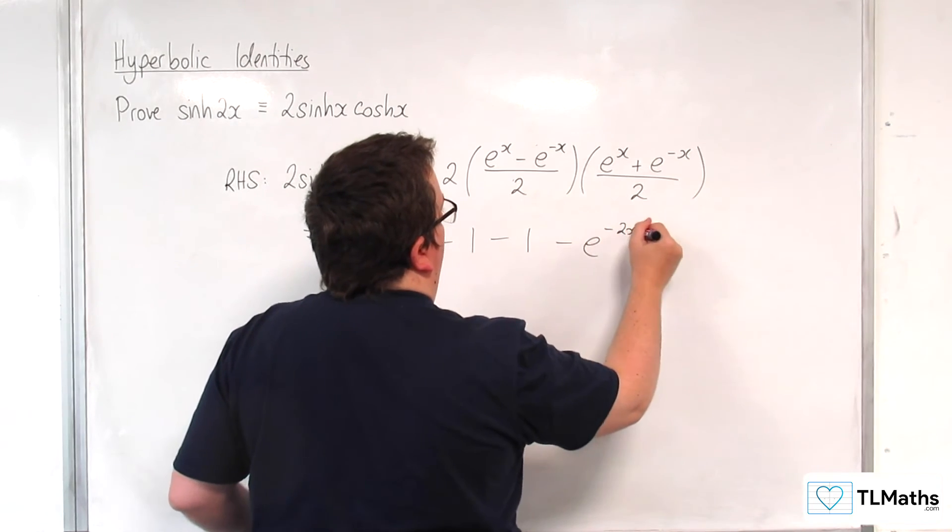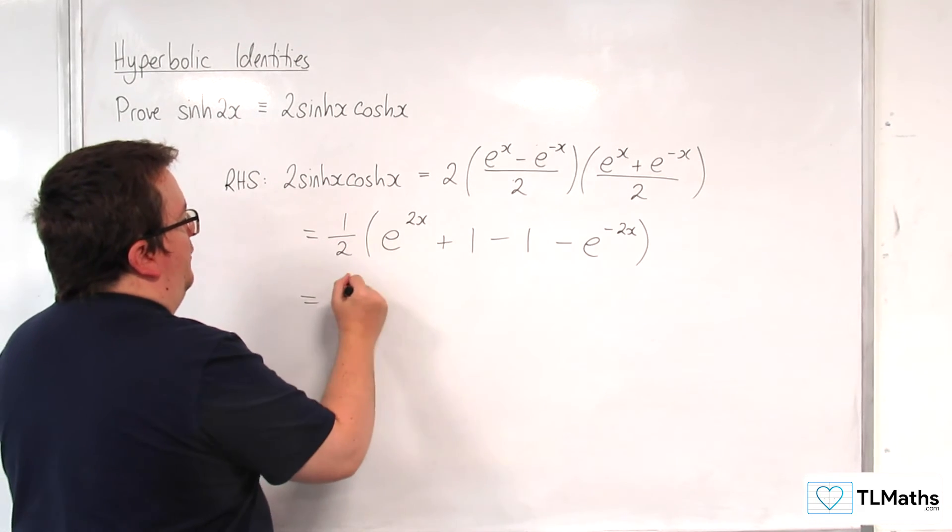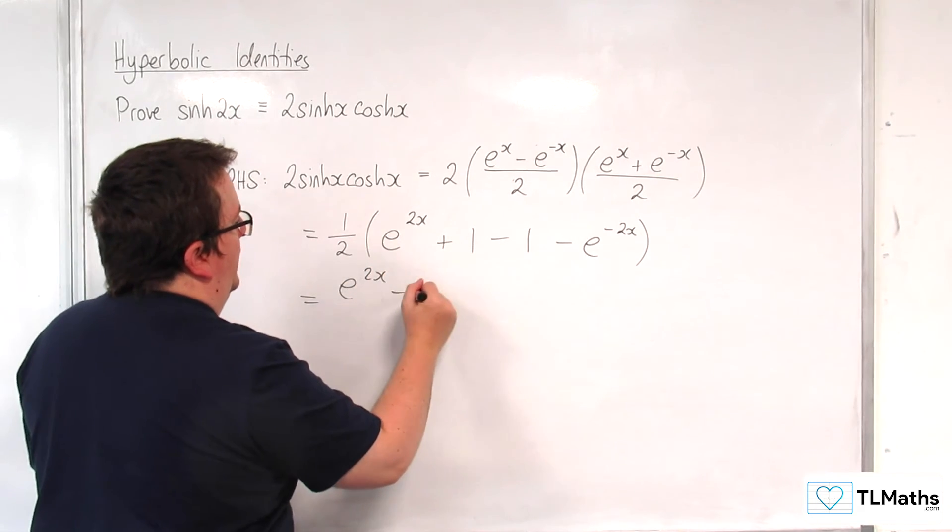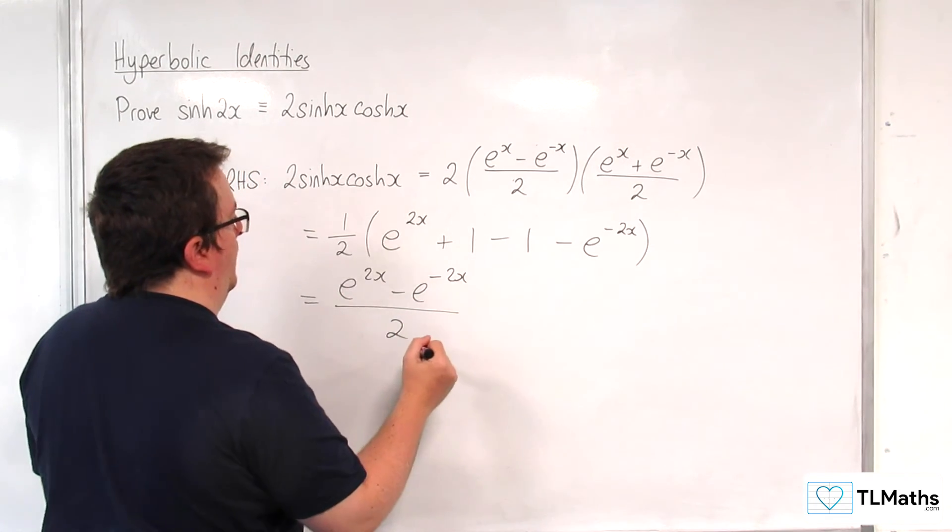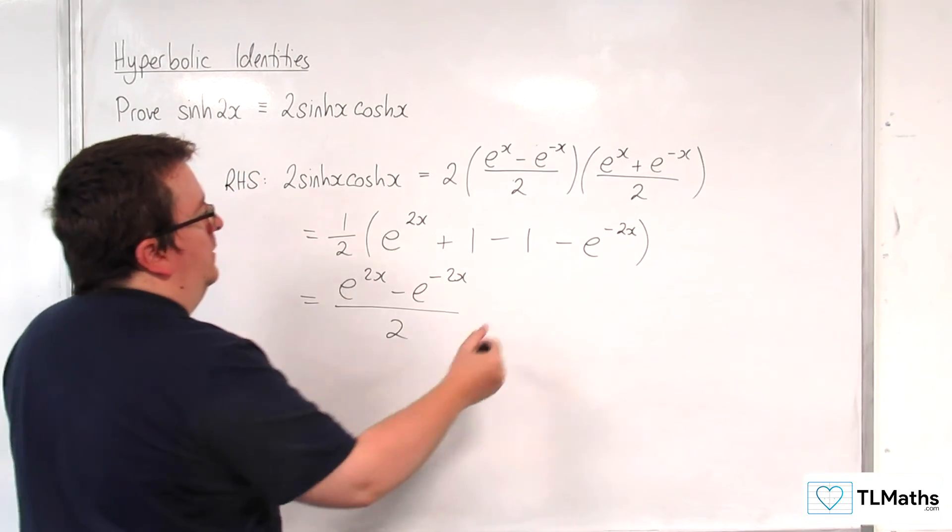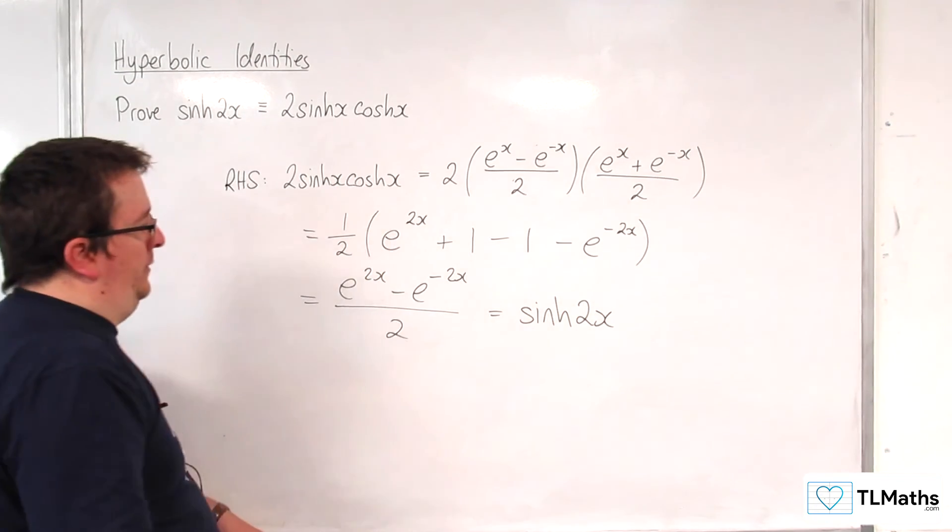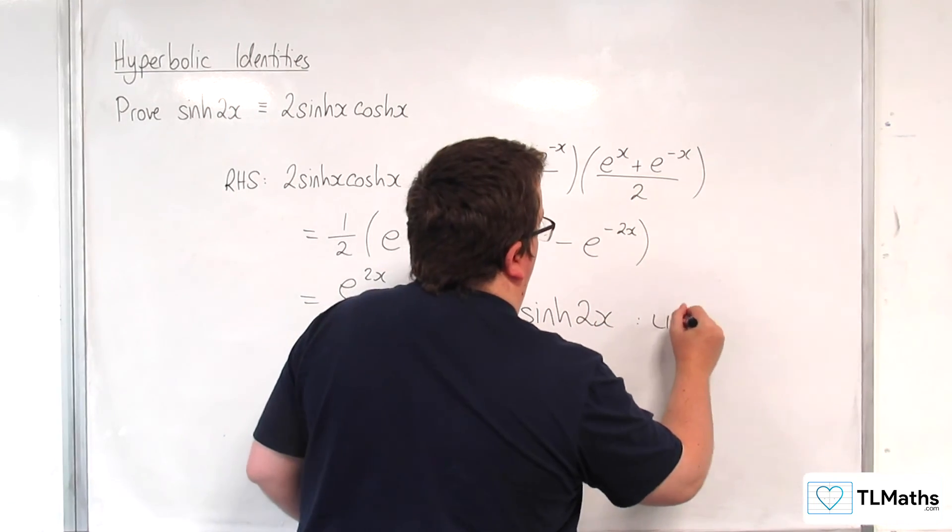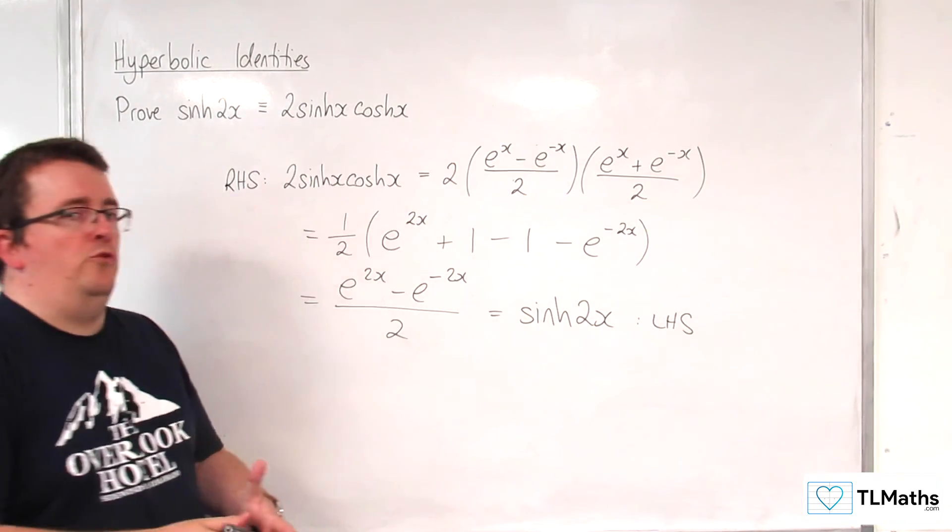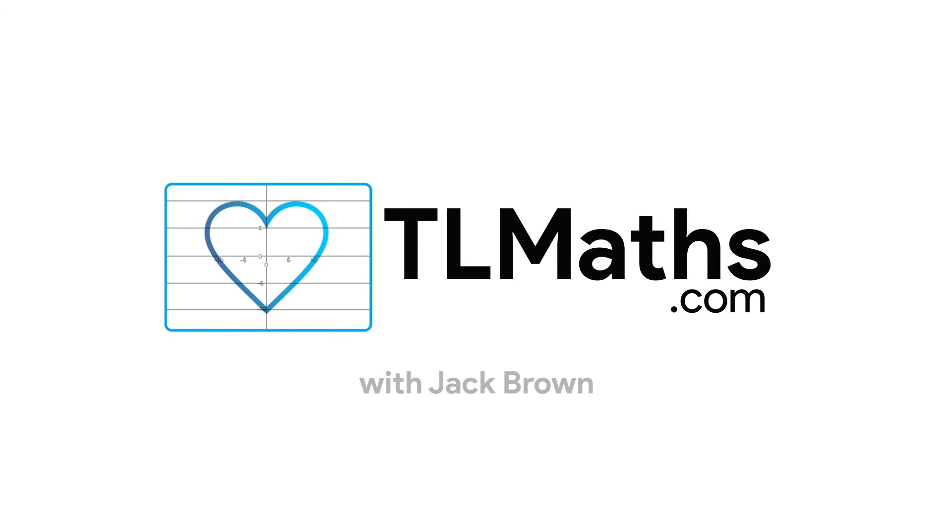So the 1's cancel and I'm left with e to the 2x take away e to the minus 2x over 2, which is the same as sinh of 2x, which is our left hand side. And so the identity is proved. Thank you.